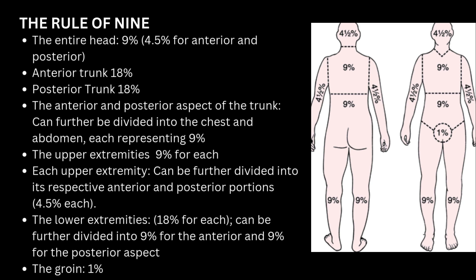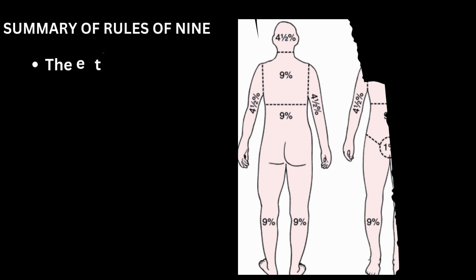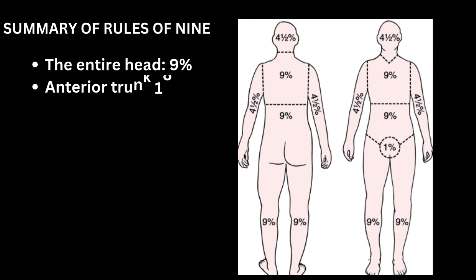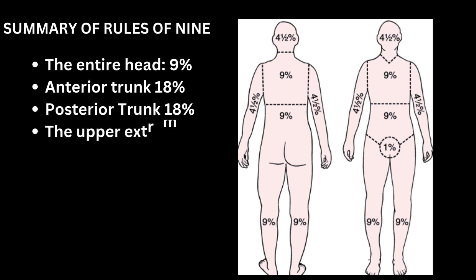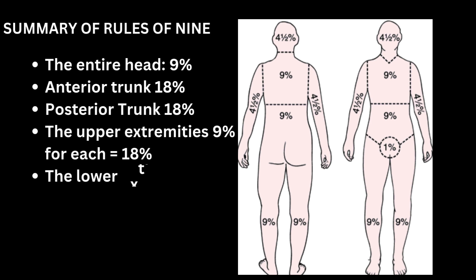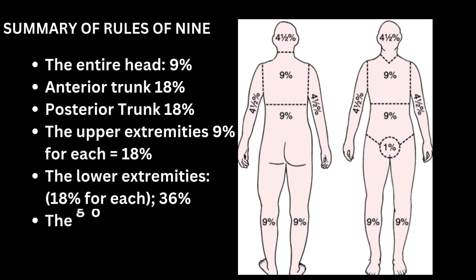The lower limb as a whole is 18%. This lower limb of 18% has both anterior and posterior surfaces — the anterior surface of the lower limb is 9% and the posterior surface is 9%, making the whole lower limb 18%. The only exception is the perineum, which is 1%. So head and neck 9%, anterior trunk 18%, posterior trunk 18%, each upper limb 9%, each lower limb 18%, and perineum 1% — totaling 100%.